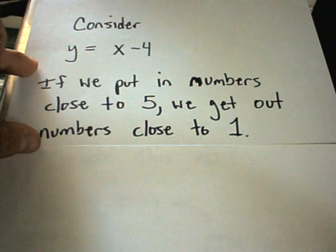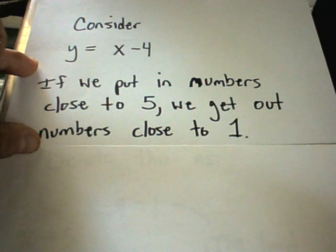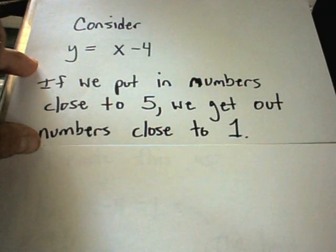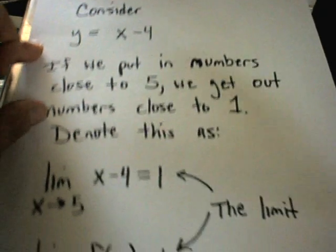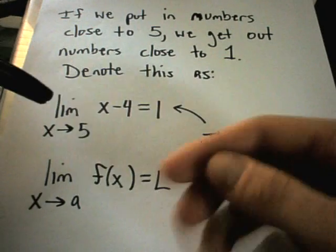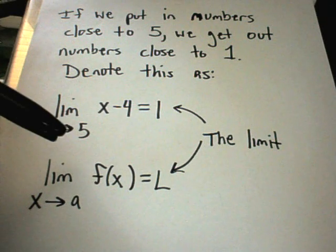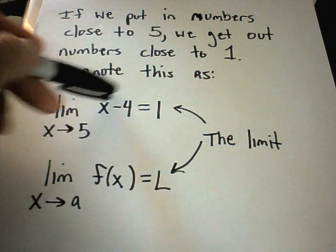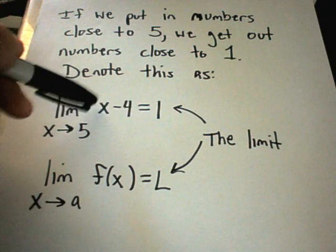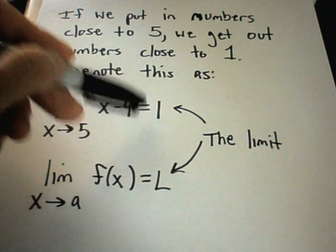And that's basically the fundamental idea of a limit. We're putting in numbers close to a specific number, and we're just trying to see what numbers we would get out of our formula. The notation for this is we write the limit as x approaches 5, and if I plug them into the formula, I get numbers close to 1.